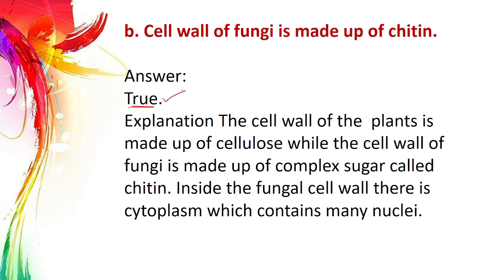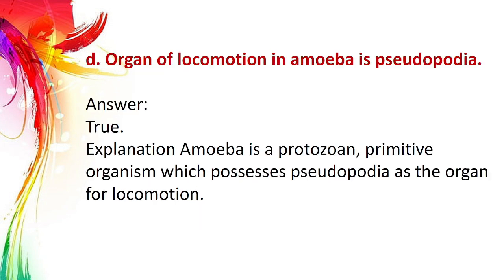Statement B: The cell wall of fungi is made up of chitin. Answer: True. Explanation – The cell wall of plants is made up of cellulose, whereas the cell wall of fungi is made up of a complex sugar called chitin. Inside the fungal cell wall there is cytoplasm which contains many nuclei.